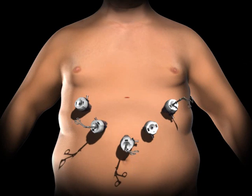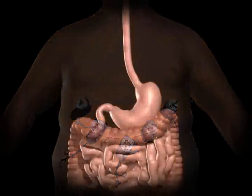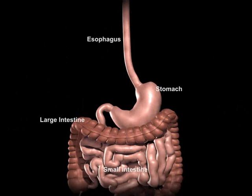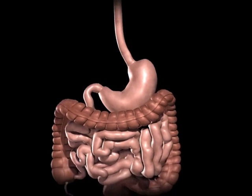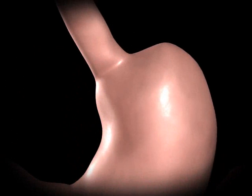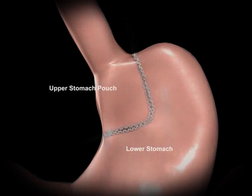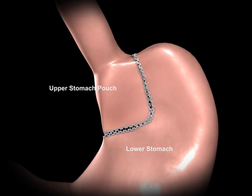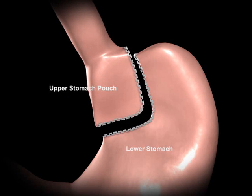The surgeon examines the abdominal cavity using a laparoscope or video camera. A small stomach pouch is created using a stapling device. This smaller stomach pouch restricts the amount of food that can be eaten before feeling full.